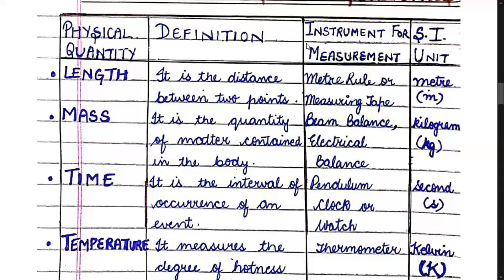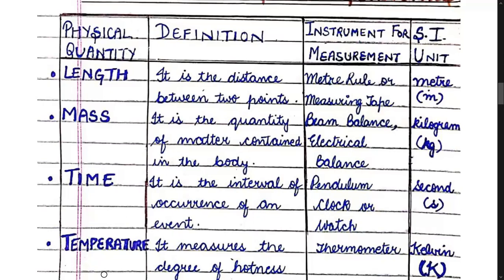The next physical quantity is time. Time is the interval of occurrence of an event. The instruments used to measure time are a pendulum clock or a watch. The SI unit of time is seconds.